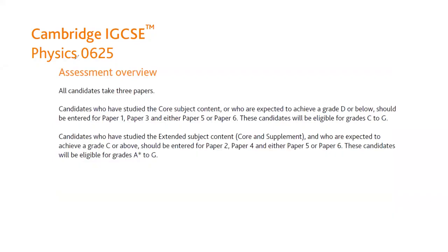The syllabus codes give you two ways to select. If you want your result in alphabets, you can select code 0625. Like chemistry, you have core and extended. If you select core, the papers you will sit are Paper 1, Paper 3, and either Paper 5 or 6, but the maximum grade you can achieve is C.